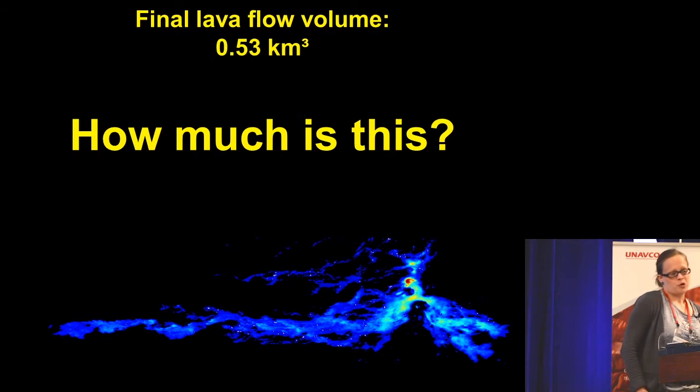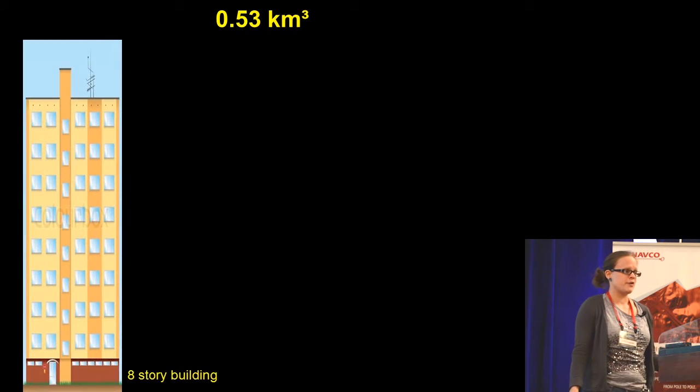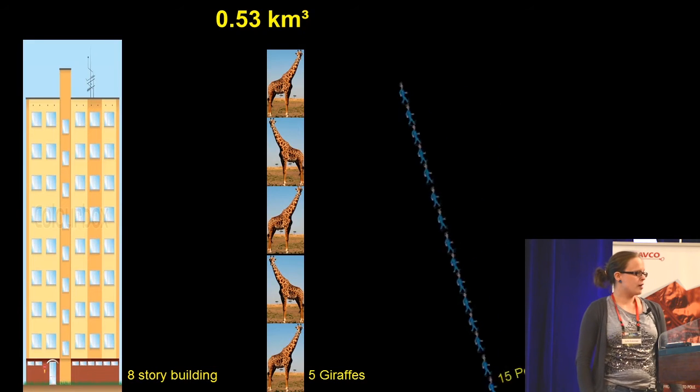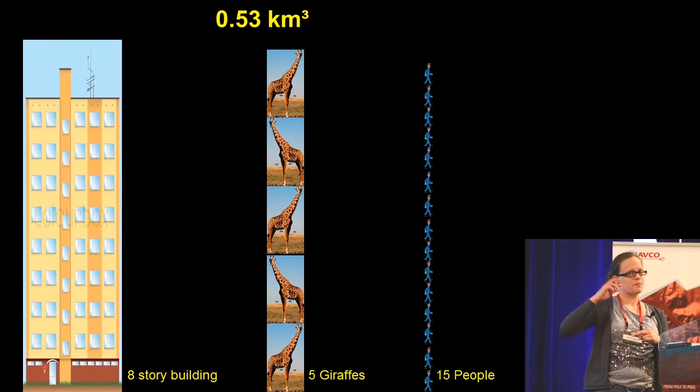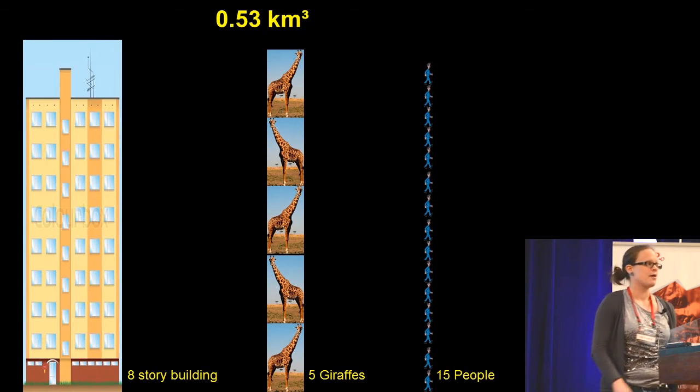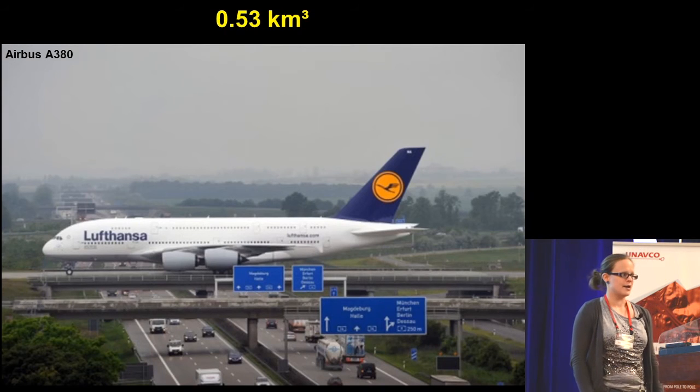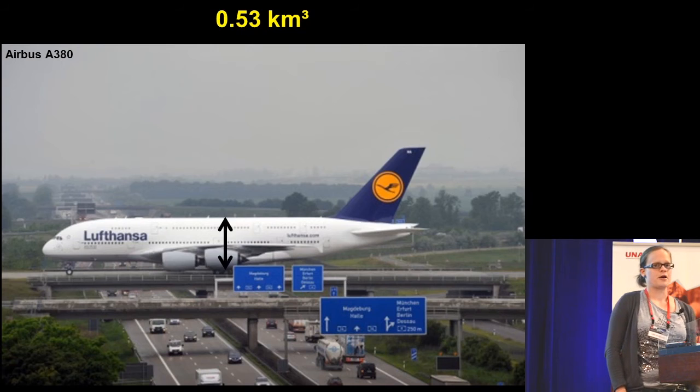We have to look at different things to try to find out. We can look at an eight-story building, for instance, or we can put five giraffes on top of each other, or we can take 15 people on top of each other, and they have something in common. They have the same height like an Airbus A380.